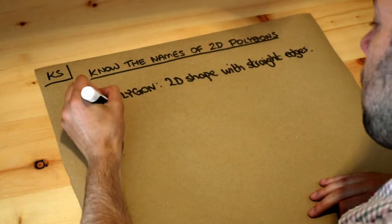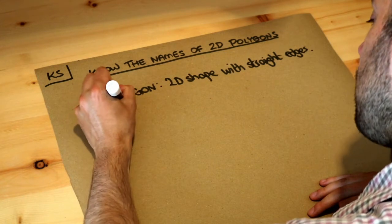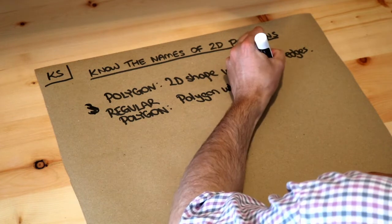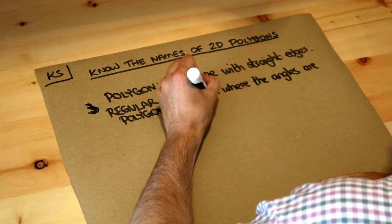And let's also define what's meant by a regular polygon. So a regular polygon is a polygon where the angles are equal, so all the angles in the polygon are the same, and the side lengths are equal.